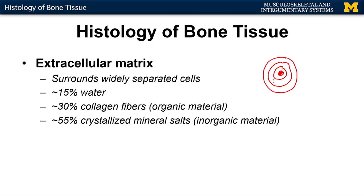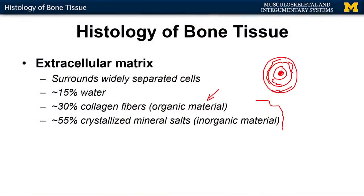What's actually making up all of this? You can see some stats right here on the slide — about 15% water, like most things. What I want us to focus on are the collagen fibers and the mineral salts. Collagen fibers are the organic material of the extracellular matrix, and they're going to be secreted by certain cells referred to as osteoblasts. Anytime you see the term 'blast,' you know that something is being secreted — in this case, the organic material.